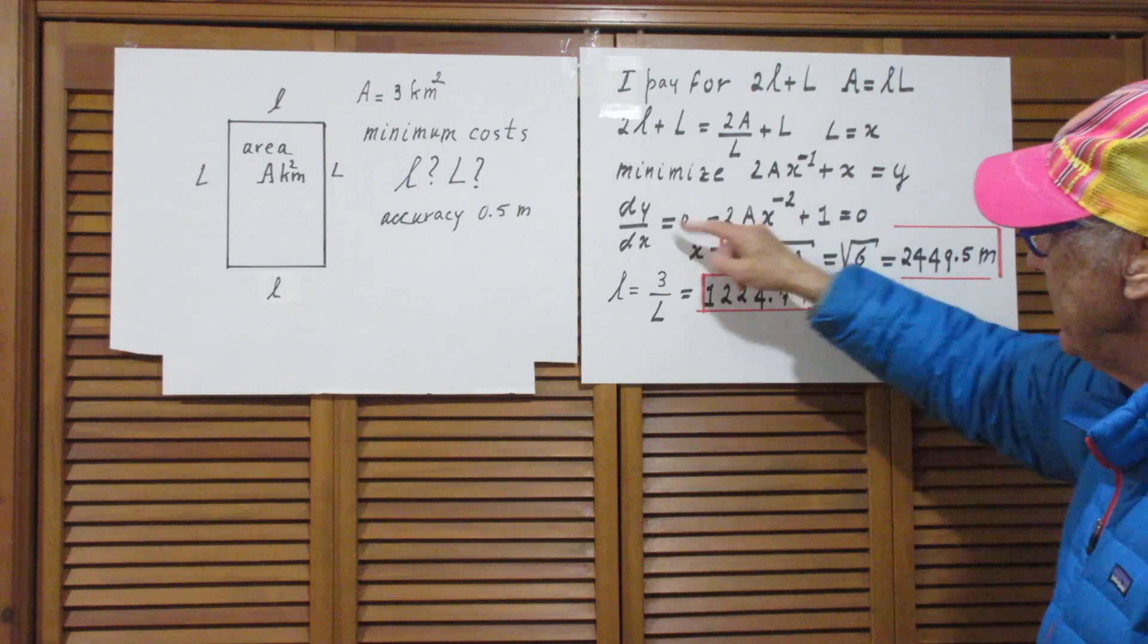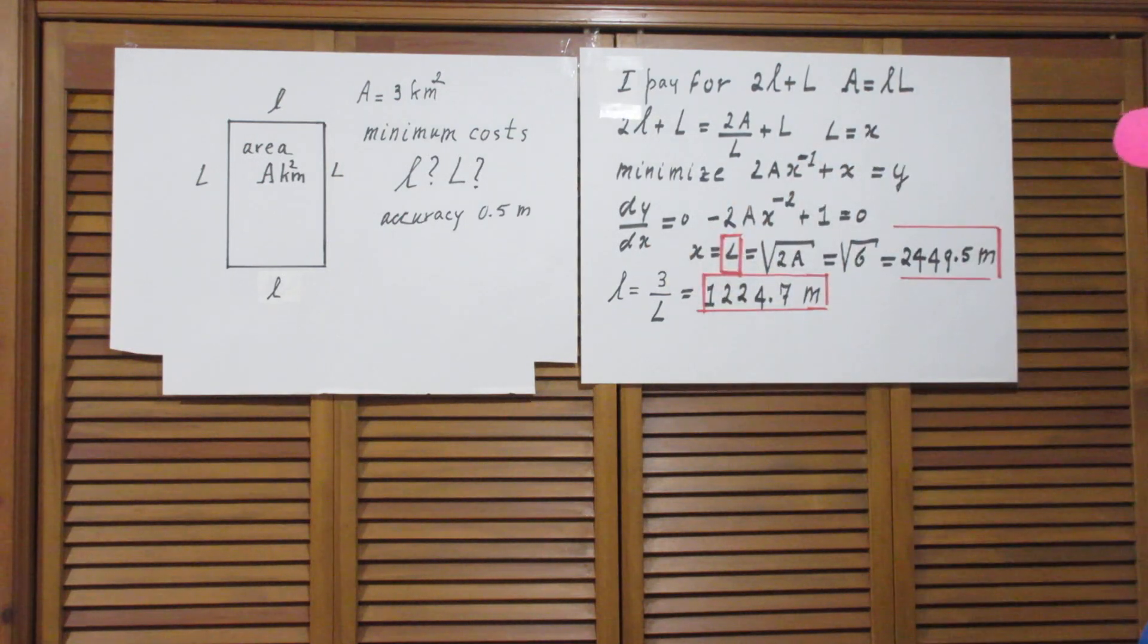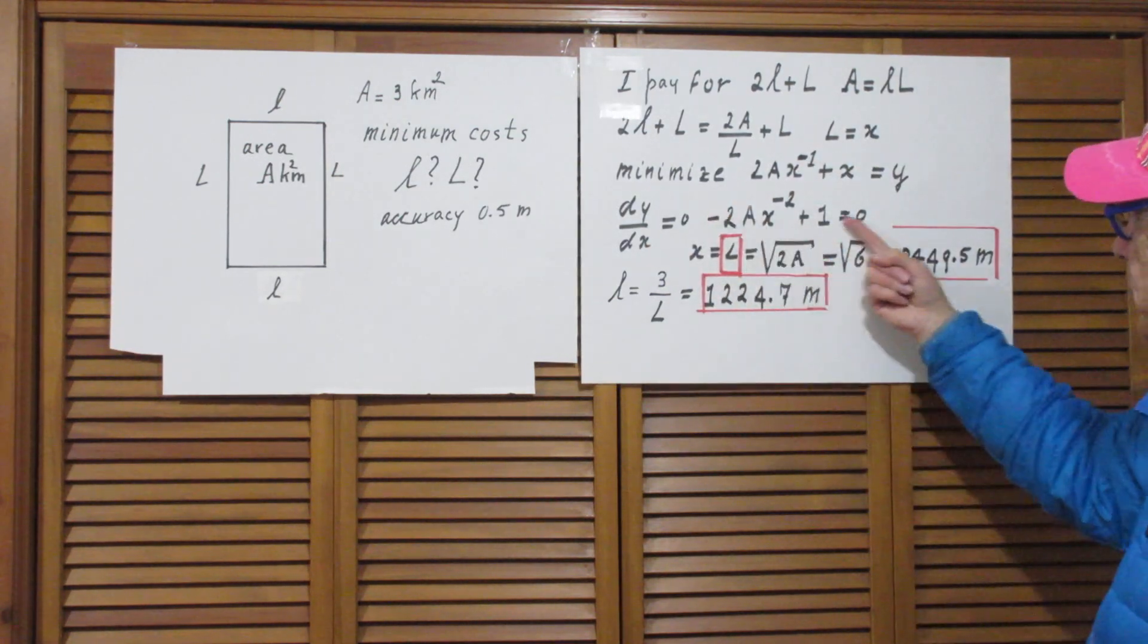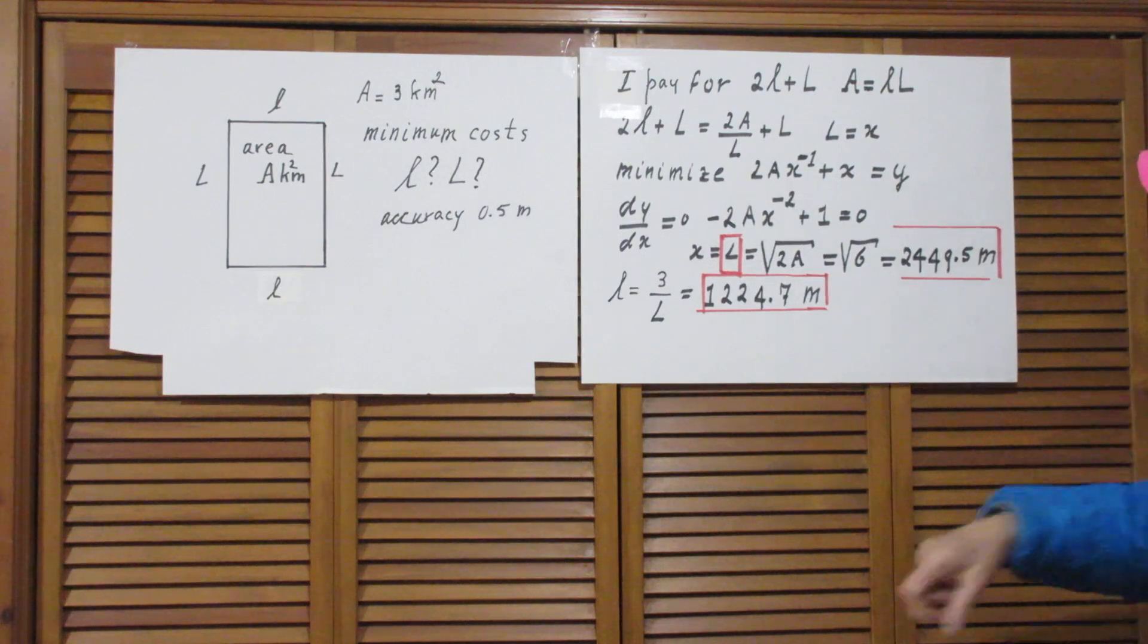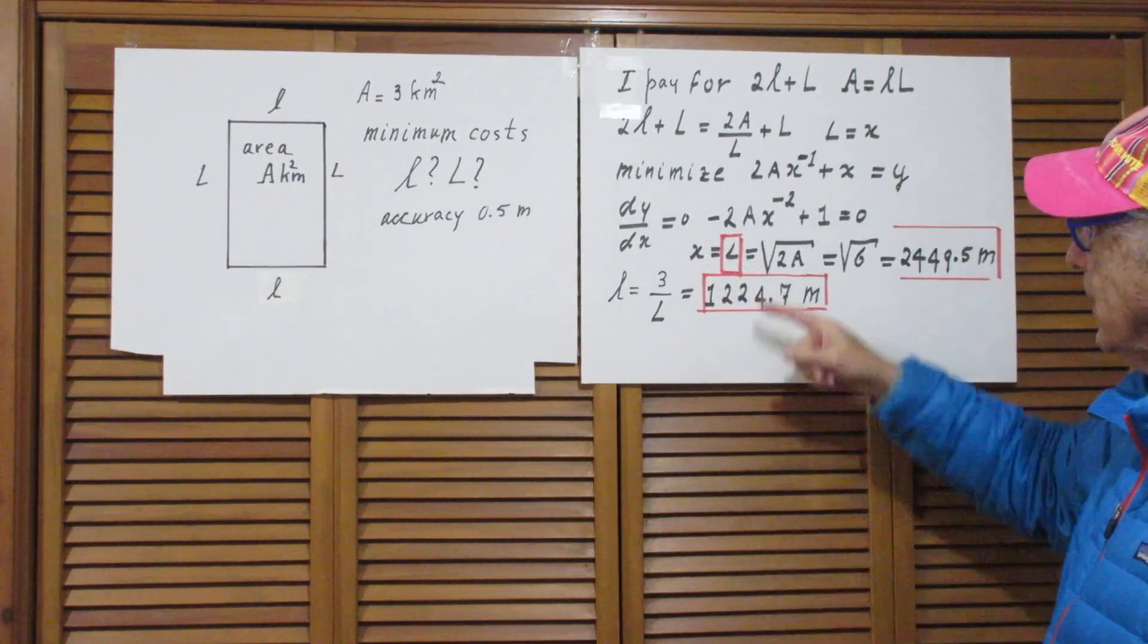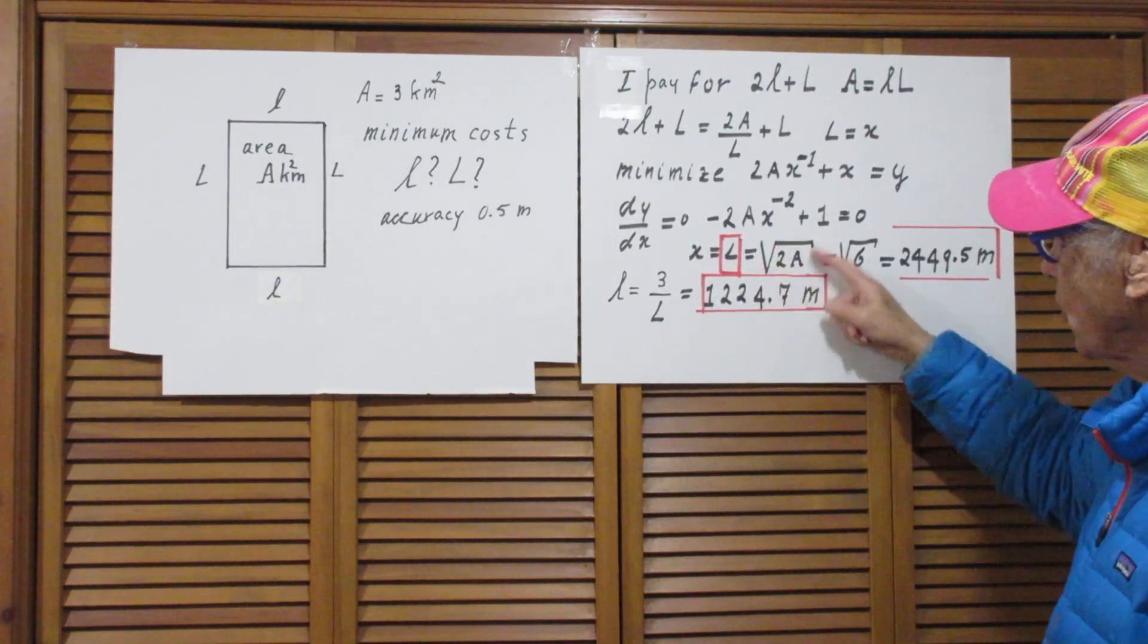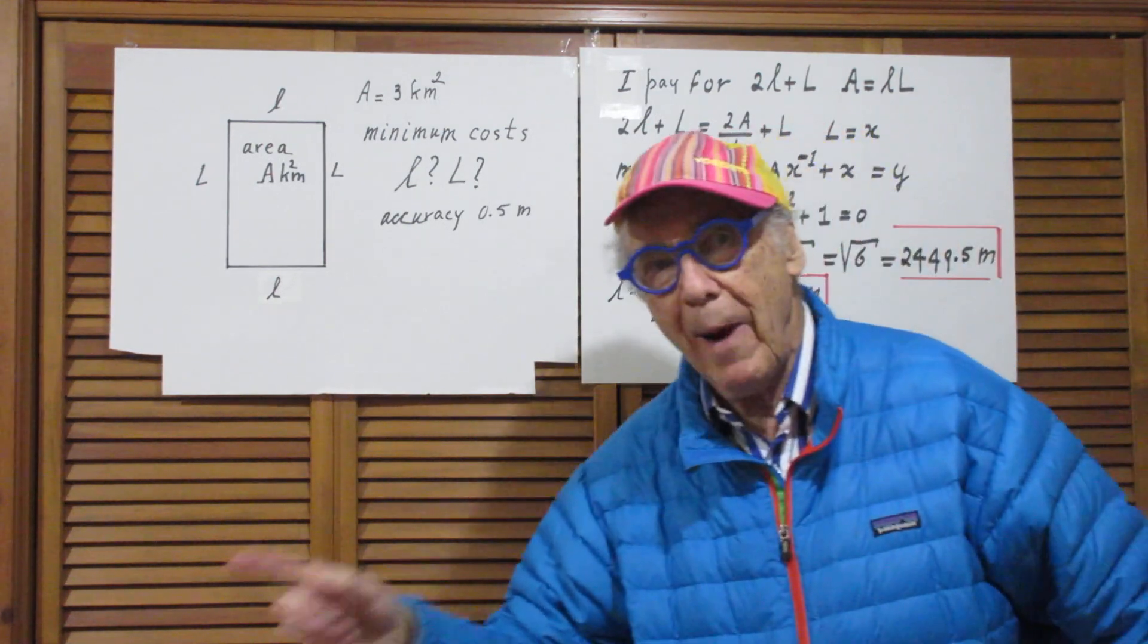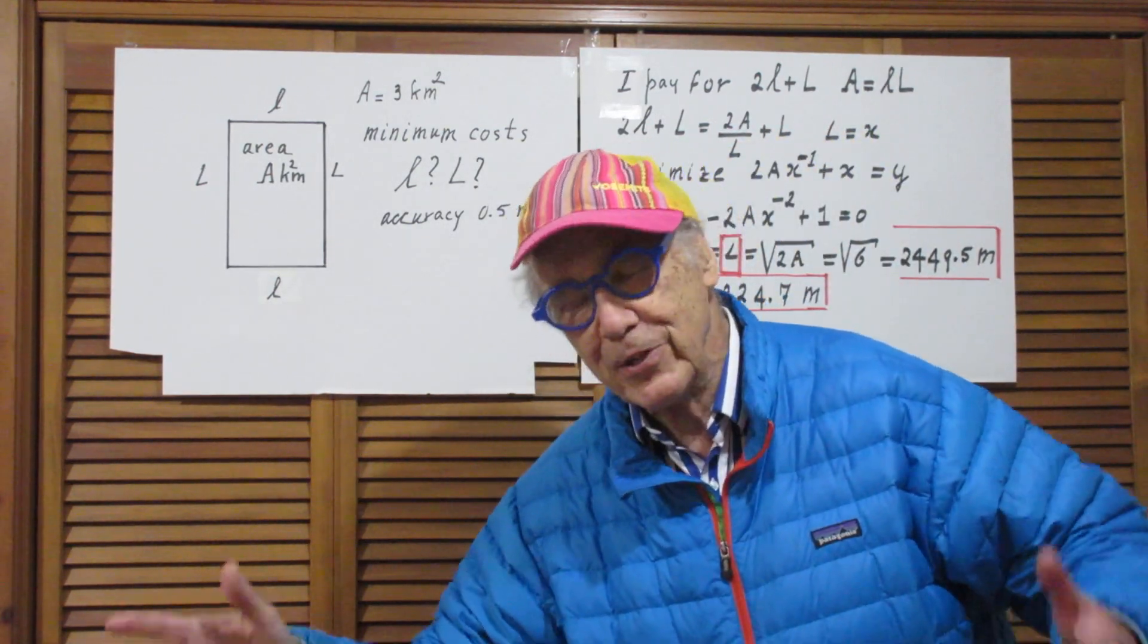So dy/dx equals 0, and so x, which is L, is plus or minus the square root of 2A. Now the minus is of course meaningless, so it's just plus the square root of 2A.